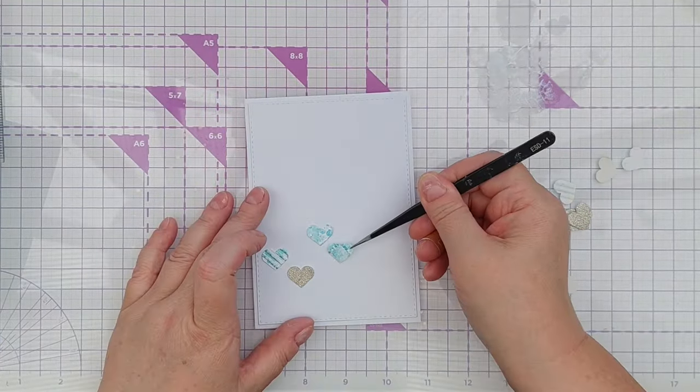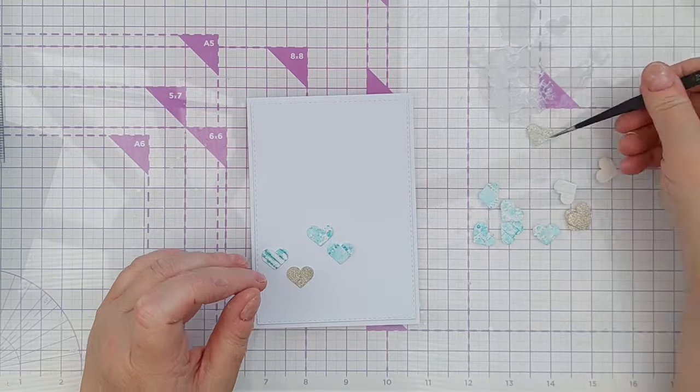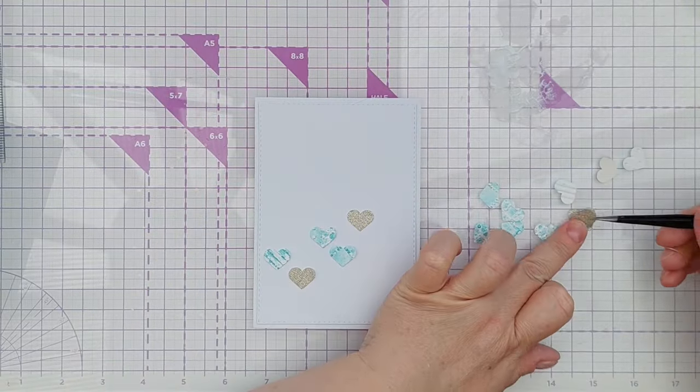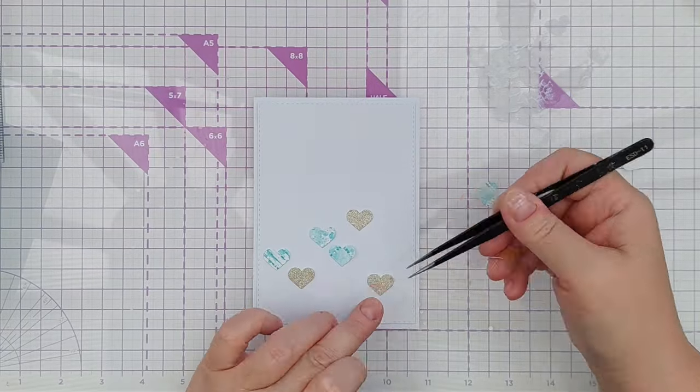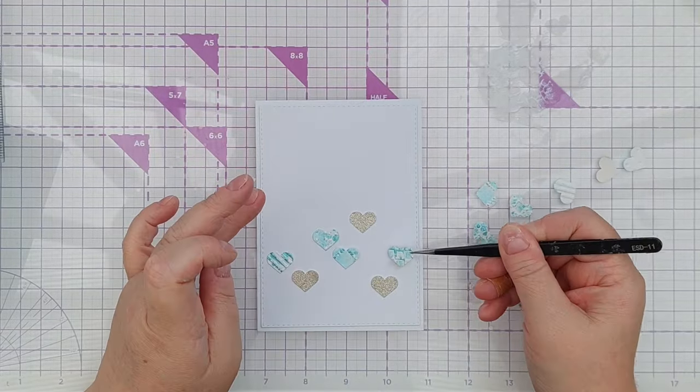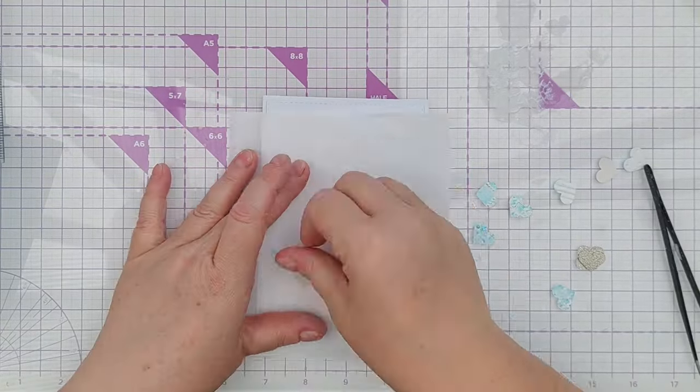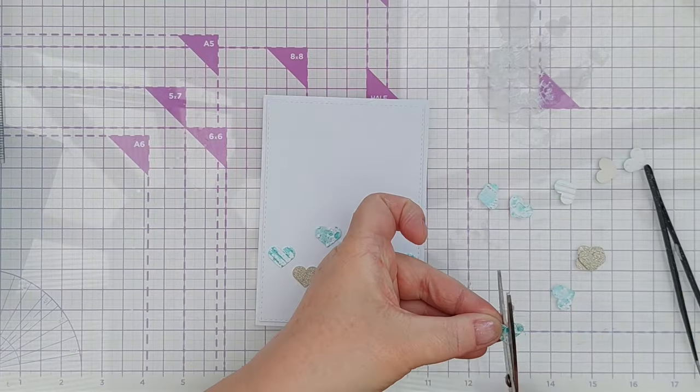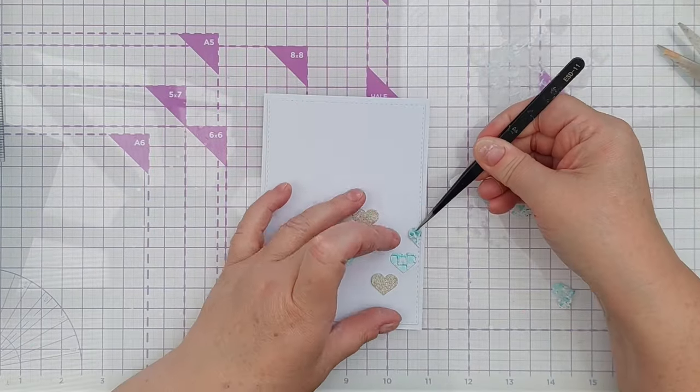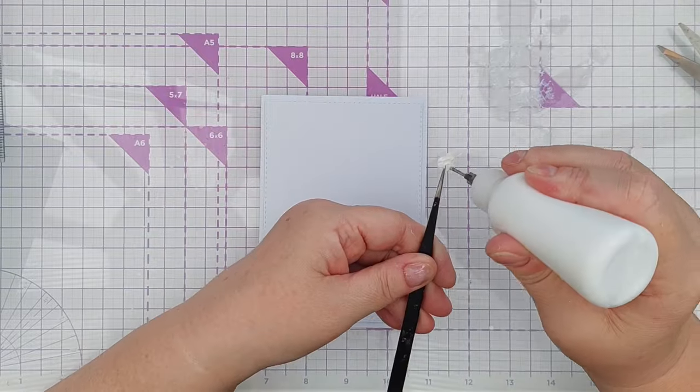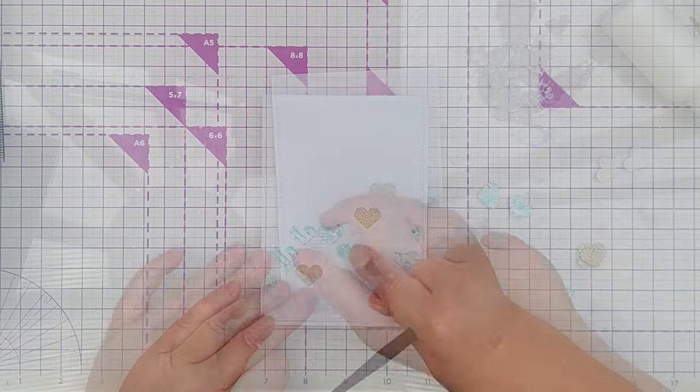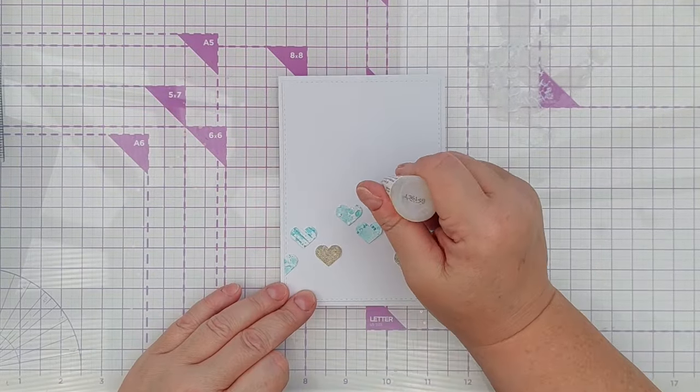When it came to adding them to the card I decided to go less regular and more free form. So I started in the lower left hand corner and added the hearts in a sort of broad arc upward mixing in some glittery hearts as I went. Once they were all down I added glossy accents to the glittery hearts and left them to dry.